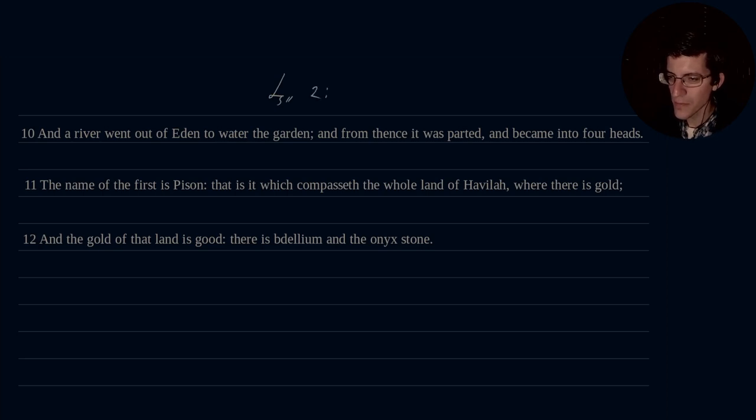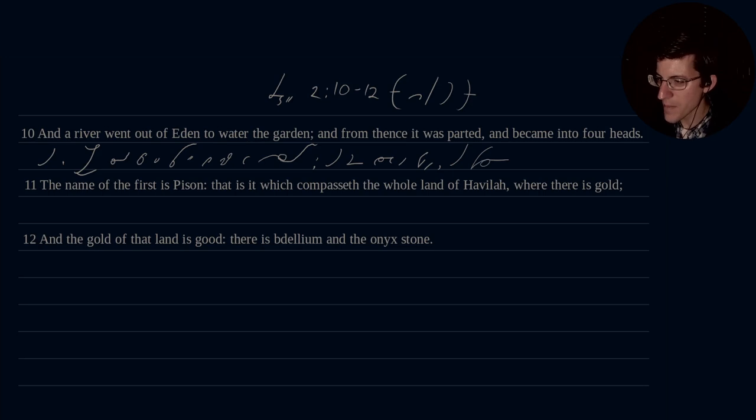Genesis 2, 10 through 12. King James Version. And a river went out of Eden to water the garden. And from thence, it parted and became into four heads.